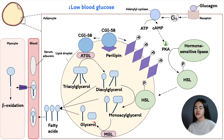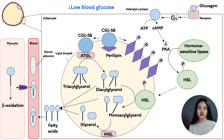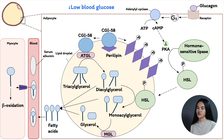The glycerol produced can enter the glycolysis pathway. Now that the fatty acids are released, they must enter the mitochondria to be oxidized. The reason they need to enter the mitochondria is because the enzymes involved in fatty acid oxidation are found within the mitochondrial matrix. So the fatty acids must be activated and then transported into mitochondria.